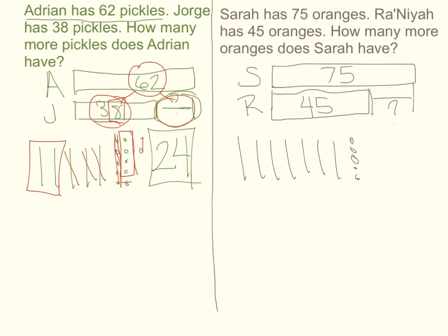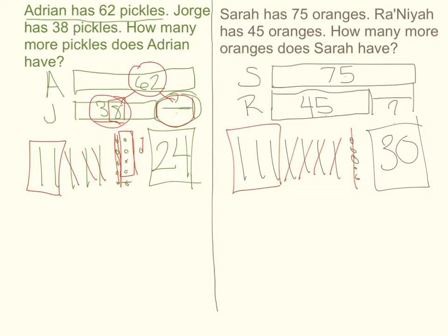On your paper, you should have crossed out all 5 of the ones because 5 minus 5 is 0. Then you should have crossed out 4 of the tens. Boxing your remaining tens, you would have 10, 20, 30 left over with no ones. So on your side, you should have put 30. If you missed any of these steps, please stop the video and try it again.